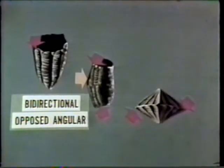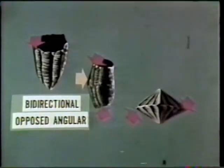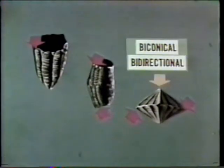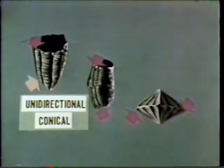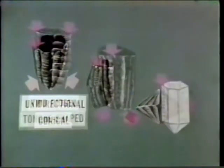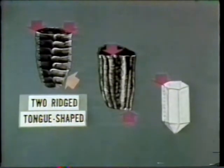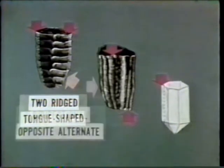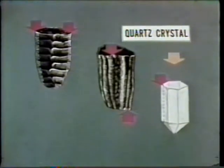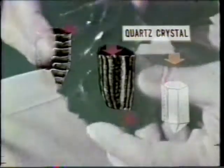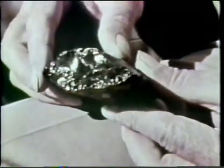Various types of cores are: bi-directional opposed angular core, bi-conical bi-directional core, unidirectional conical core, two-ridged tongue-shaped core, bi-directional opposite alternate core, and quartz crystal. Blades can be produced from cores by percussion, either direct or indirect, or by pressure.